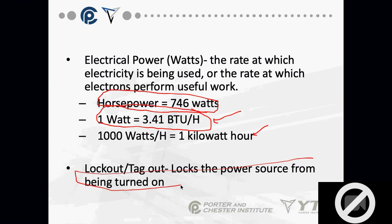A BTU is a British thermal unit — a measurement of heat. One BTU raises the temperature of one pound of water by one degree Fahrenheit. So 3.41 BTUs would raise the temperature of one pound of water by 3.41 degrees in one hour.